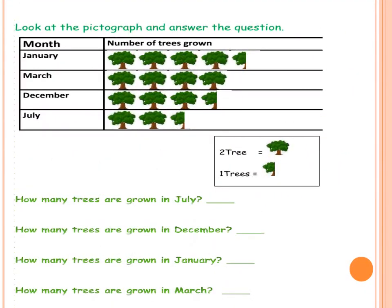And we have 7 chocolates. And now, choose the pictograph. Here we have a table with months: January, March, December, July. This table shows us how many trees grown in each month. We want to see the key here, which is 2 trees represent 1, and 1 tree represents half of the tree. Focus on the key of the pictograph. Each tree represents 2 trees, and each half represents 1 tree.